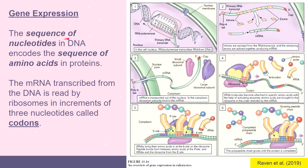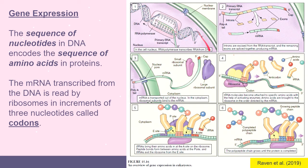This is how gene expression occurs. The sequence of nucleotides in DNA — found in the nucleus — encodes the sequence of amino acids in proteins. Because DNA cannot leave the nucleus, RNA polymerase transcribes RNA from the DNA, copying segments of that DNA.